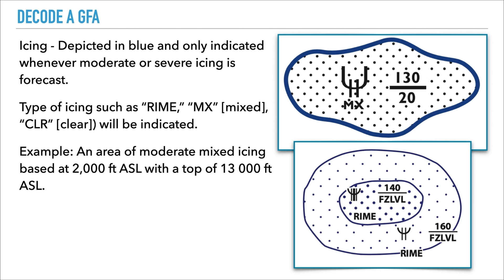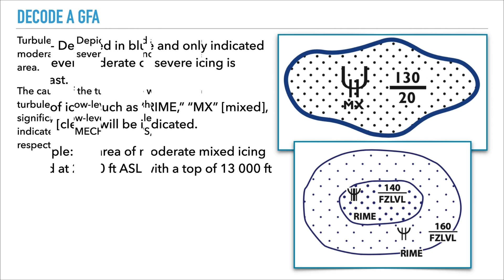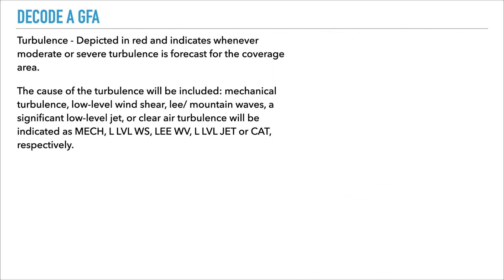The next symbol with three lines represents severe icing from the freezing level up to 14,000 feet with rime ice. In the outer circle we have moderate rime icing from the freezing level to 16,000 feet.